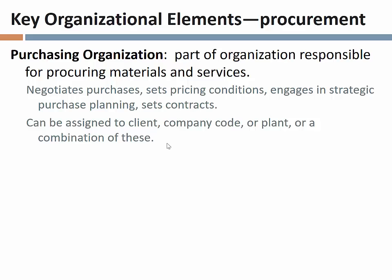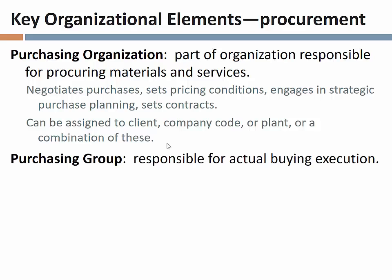At the opposite end of the spectrum, a very decentralized purchasing strategy might have a plant with its own purchasing organization fulfilling the strategic aspect of purchasing for just that one plant. We can have multiple purchasing organizations within a company — some assigned to the client level, some to company code level, or some to plant level. We'll dig into that in more detail later.